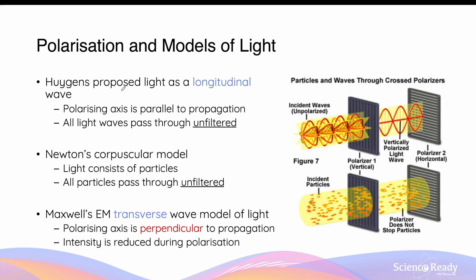Polarisation of light plays an important role in the development and acceptance of various models of light. Huygens' wave model of light could not explain polarisation because he described light as longitudinal. If this were the case, light would pass through all polarisers without any reduction in intensity, because in longitudinal waves the direction of oscillation is in the same direction as propagation, so a polariser would not be able to filter any of the light waves.